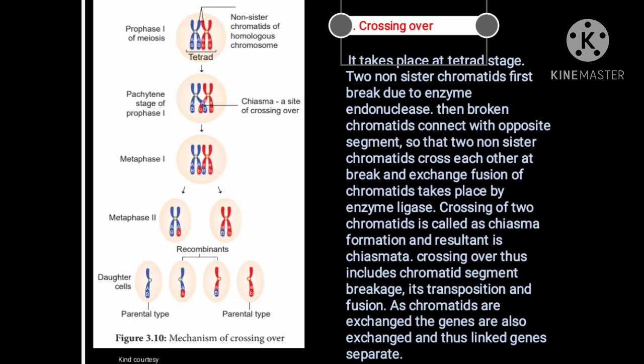The third stage is crossing over. It takes place at the tetrad stage. The two non-sister chromatids first break due to the enzyme endonuclease. The broken chromatids then connect with opposite segments, so that two non-sister chromatids cross each other at the break and exchange segments.